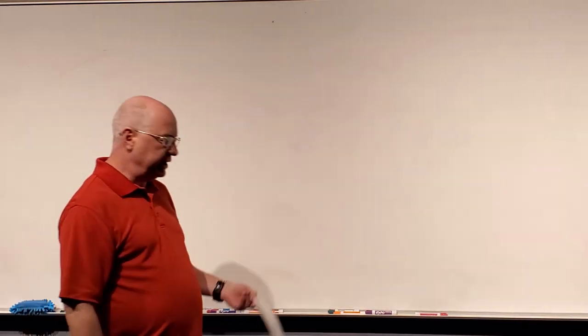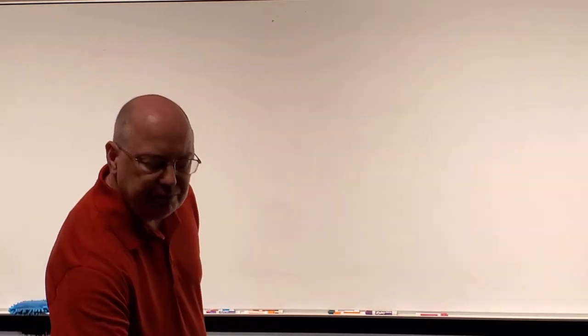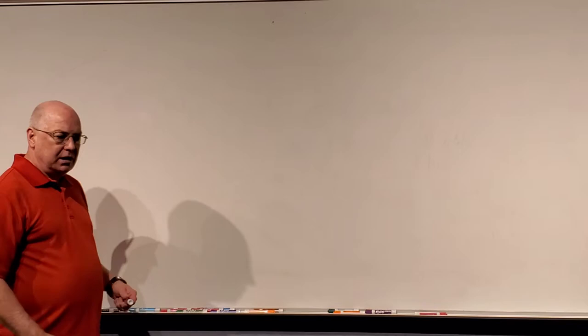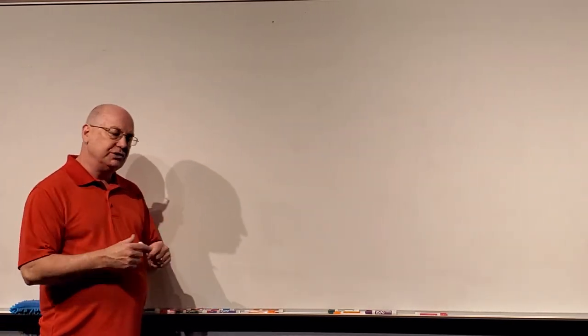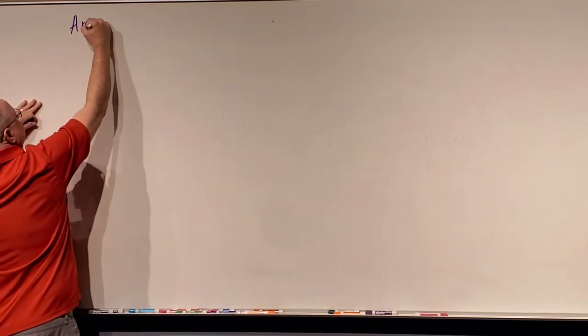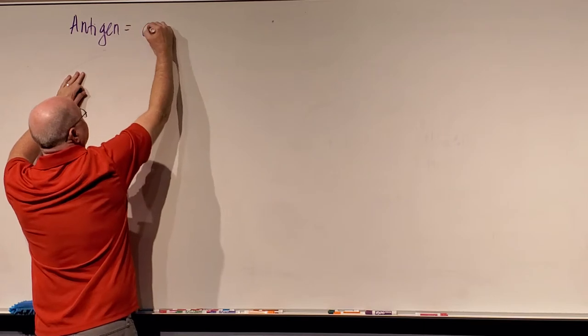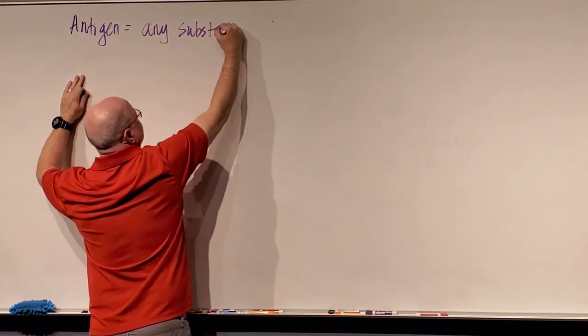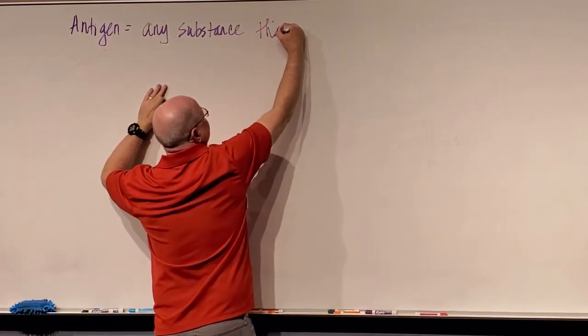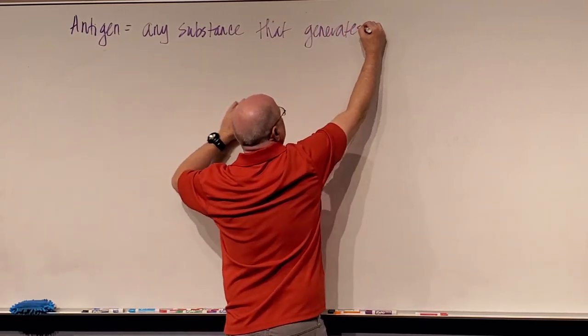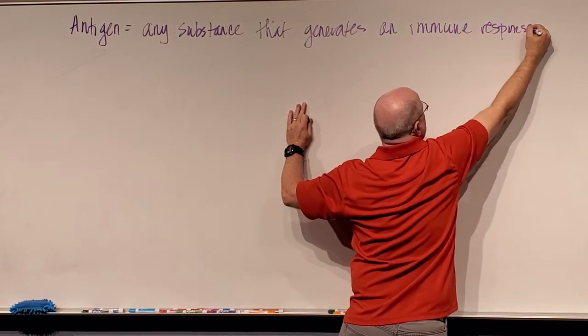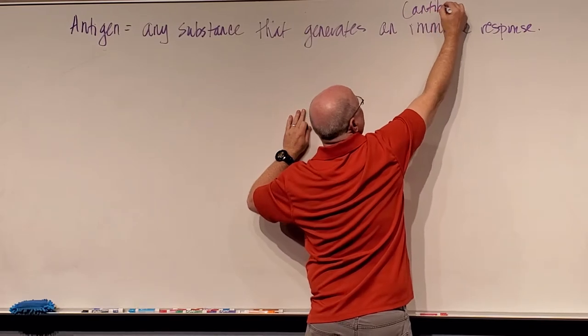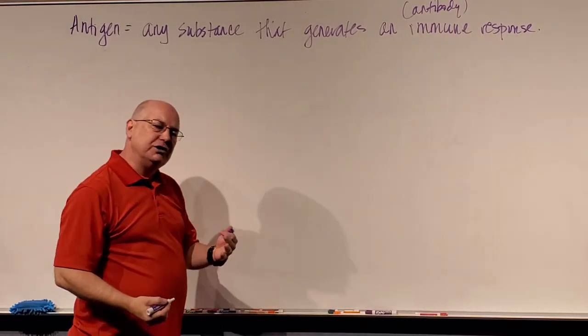We're on page 38 of my notes set. I'm going to do these definitions and then we're going to try to finish up blood. Hopefully we can do it in one or two videos. The definitions on page 38 are going to help us understand some of the lectures on the immune system. The first definition on page 38 is an antigen. An antigen is any substance that generates an immune response.